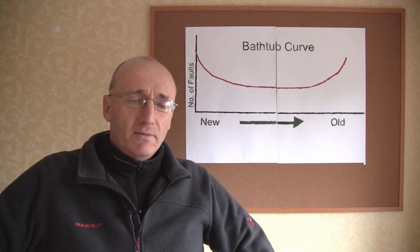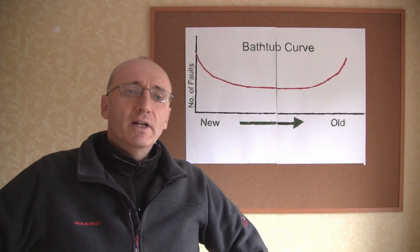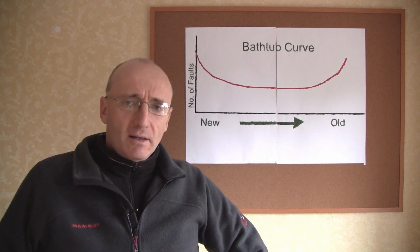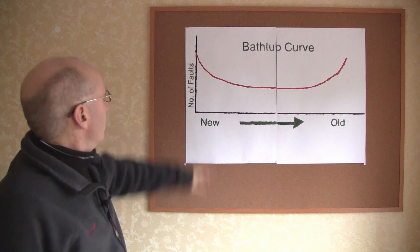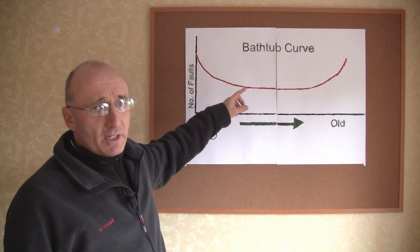This is a bathtub curve and it's used in manufacturing to help people understand when they're most likely to have problems with their products. For example, if you're making washing machines...